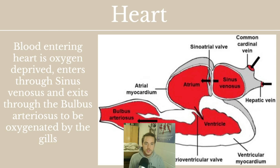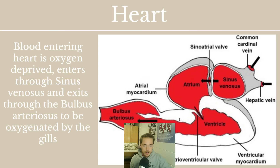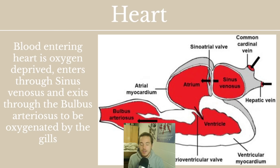Then we've got the heart, considered a center of an animal's system. When blood enters the heart — and this is true of humans as well — it is oxygen-deprived. One of blood's purposes is to take oxygen to parts of the body that need it. The blood enters through the sinus venosus, passes through a valve into the atrium, into the ventricle, and then the ventricular myocardium — the large walls of the ventricle — push it through the bulbus arteriosus. That is the heart's pulse. It takes in oxygen-deprived blood and pumps it to the gills in fish, or to the lungs in humans.